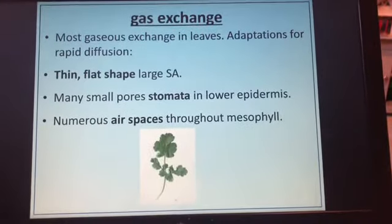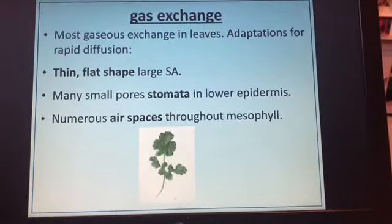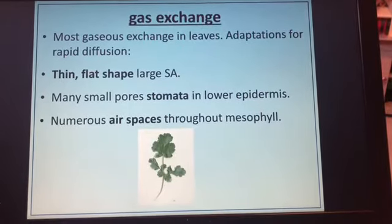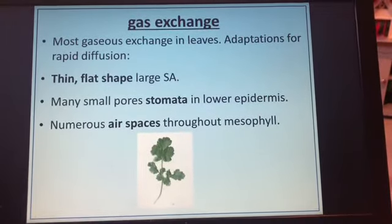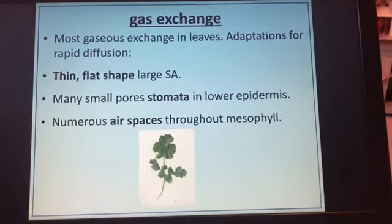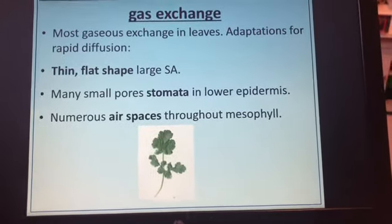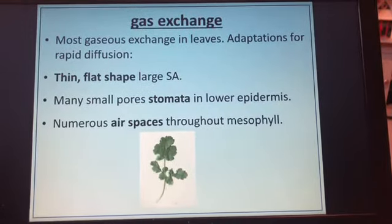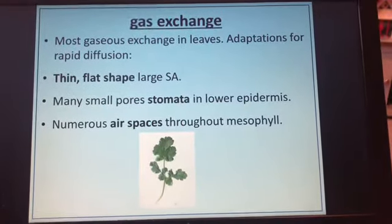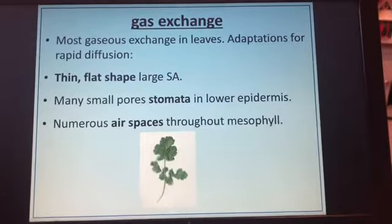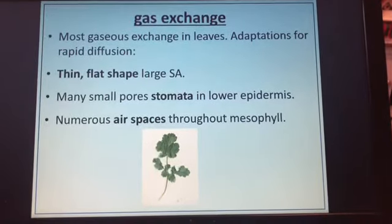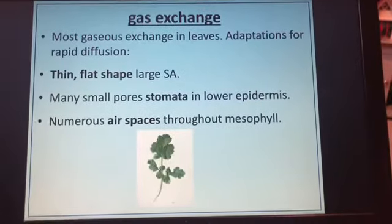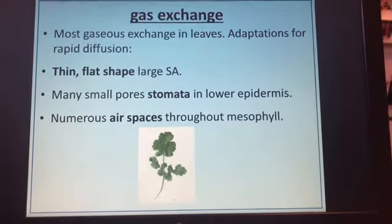The adaptations of a leaf for rapid diffusion include a thin, flat shape, which means the diffusion pathway is short, and a large surface area. There are very small stomata in the lower epidermis which allow gas exchange, and there are lots of air spaces throughout the mesophyll, meaning diffusion takes place in the gaseous phase, which is much quicker than if it were in water.